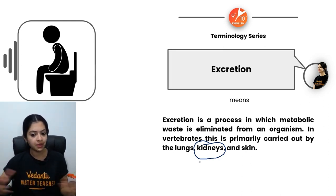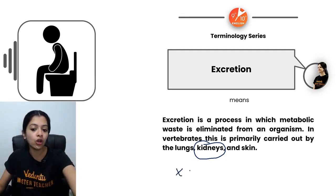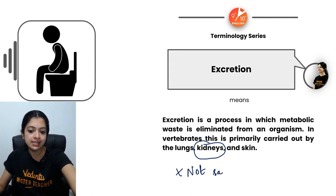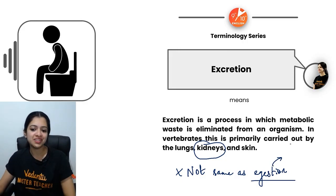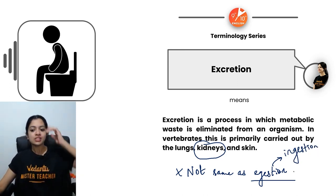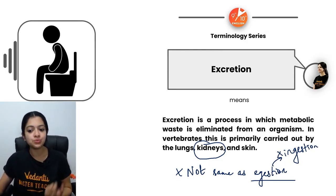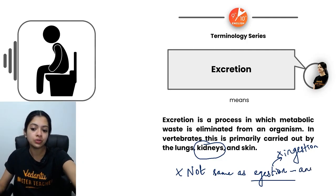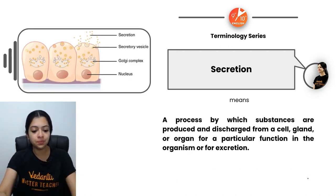An important distinction: excretion is not synonymous with ejection. Ejection is the elimination of waste products in the form of fecal matter, which occurs through the anus in the human body. Ejection is the opposite of ingestion — eating — so remember that these two terms are very different.